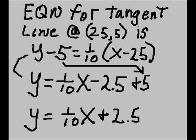The equation for the tangent line at (25, 5) is y minus 5 equals 1 tenth times x minus 25. We add 5 to both sides and what do we get? y equals 1 tenth x. 1 tenth times negative 25, well just move the decimal spot back one point and you got negative 2.5. Negative 2.5 plus 5 that we moved over from the left-hand side. Finally, we have y equals 1 tenth x plus 2.5.